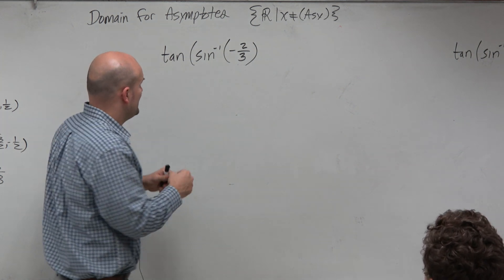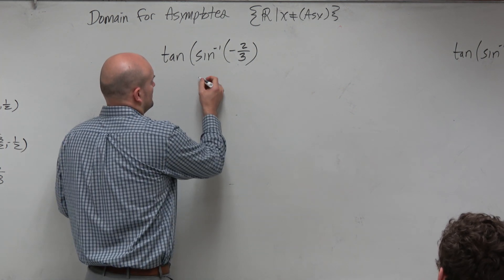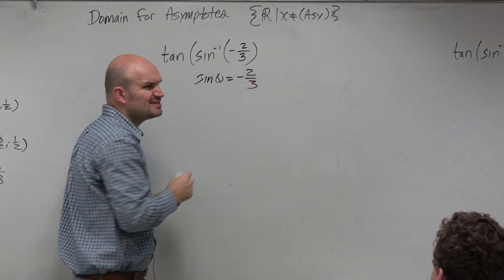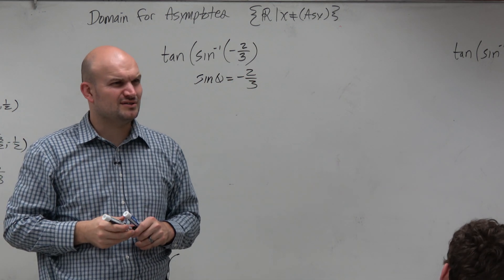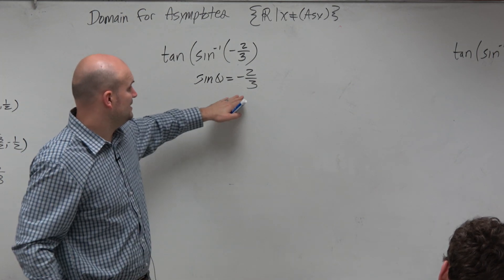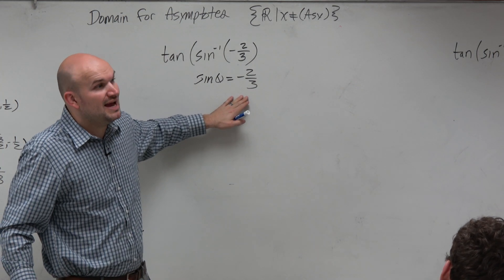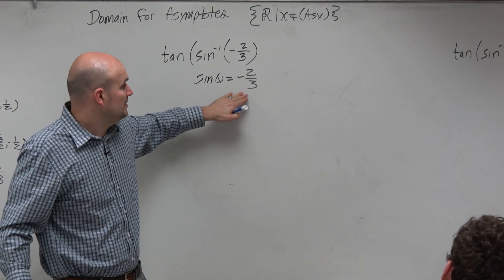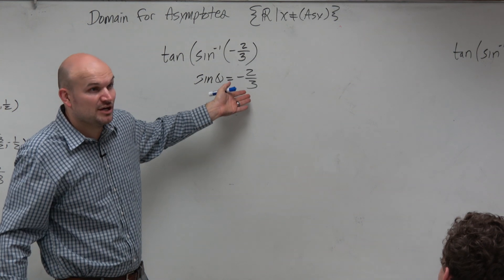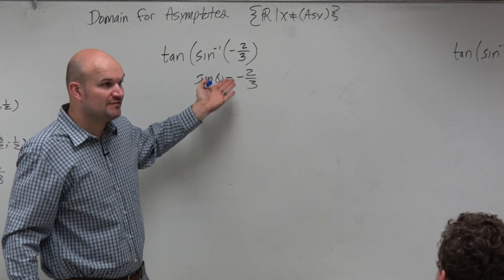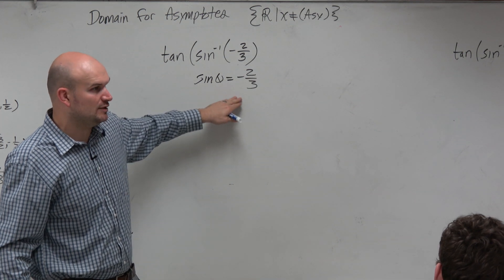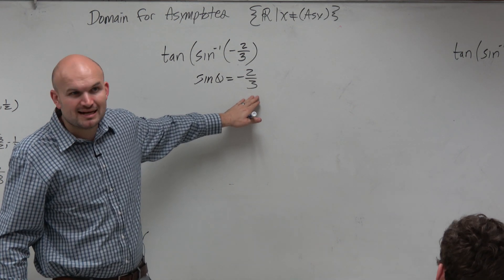But do you guys remember an angle where it's equal to negative 2 thirds? Think of the unit circle. Is that there? No. Now, is this a value on the unit circle? Well, yeah, but I don't know the coordinate point. This could be a y value on the unit circle, but we don't really have enough information. So to understand this as sine of theta equals the y coordinate is probably not the best idea.